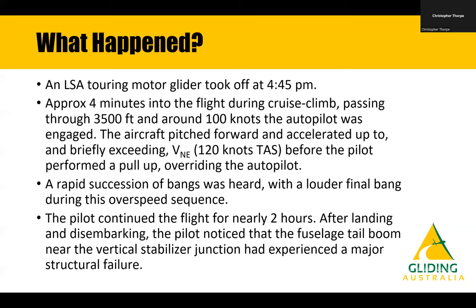This LSA touring motor glider took off later in the afternoon in the middle of summer. Approximately four minutes into the flight, whilst on climb passing through three and a half thousand feet and at a fairly high speed, this aircraft is fitted with a two-axis autopilot. It was the first time the pilot had been trying to use the autopilot. Rather than continuing the climb as the pilot expected, the aircraft pitched nose down and accelerated up to and briefly exceeding VNE — that's 120 knots IAS — after which the pilot took over the controls, overrode the autopilot and pulled up.